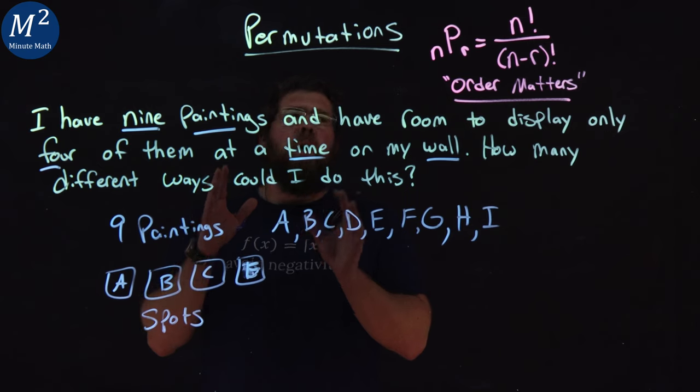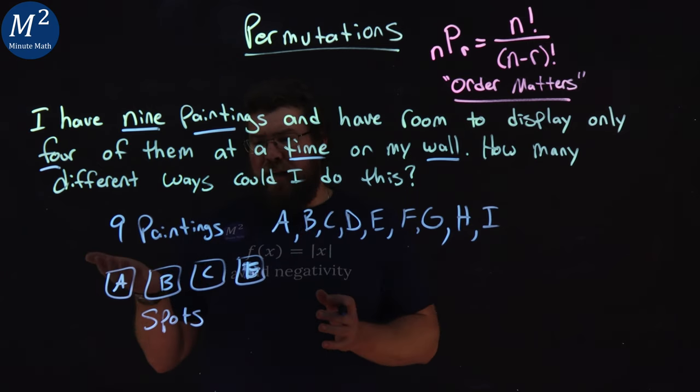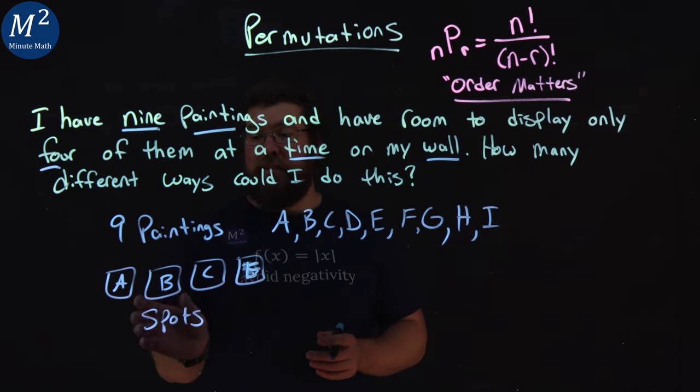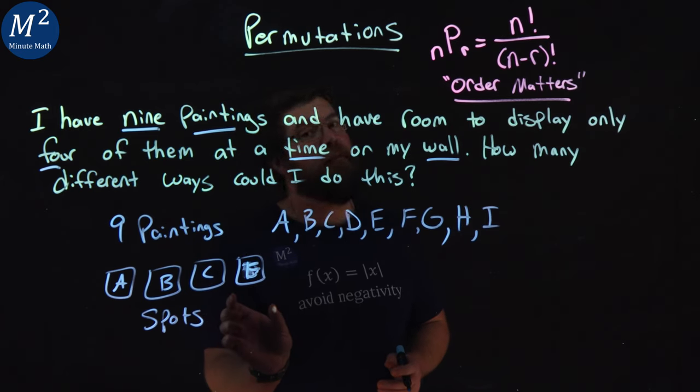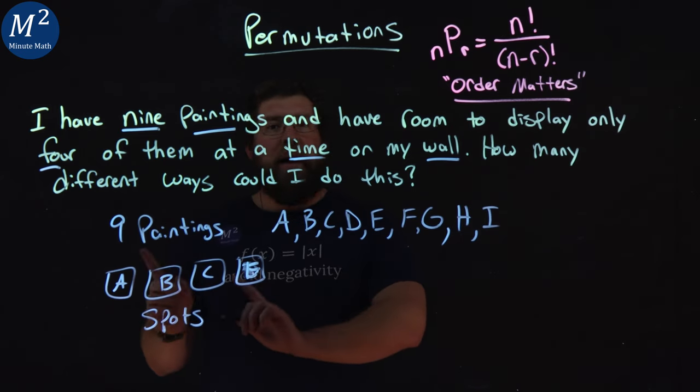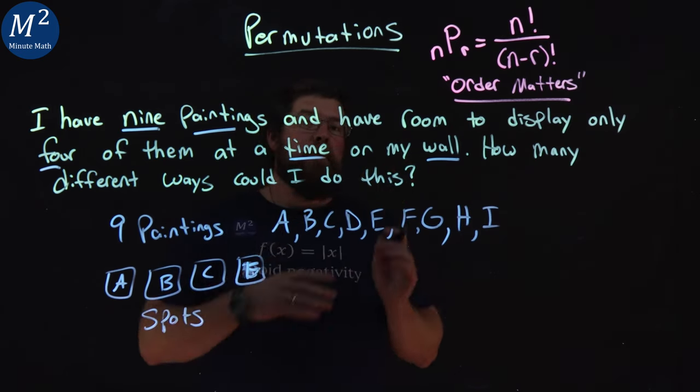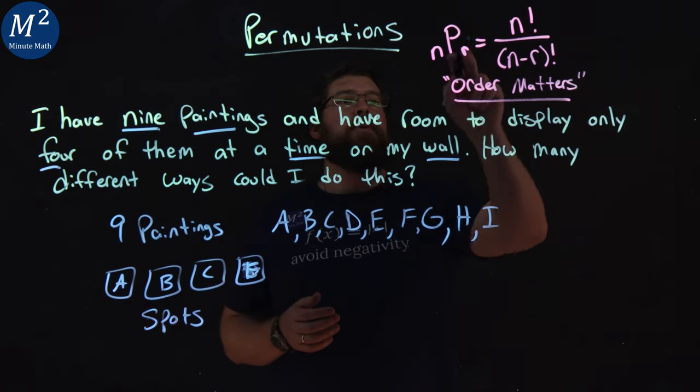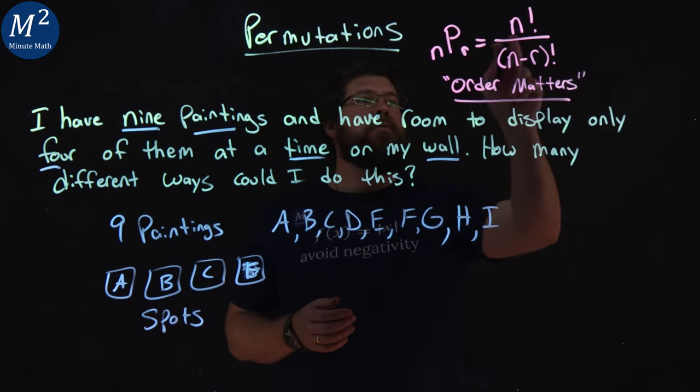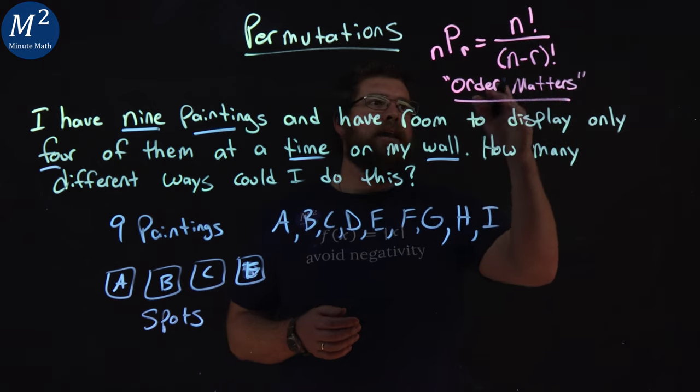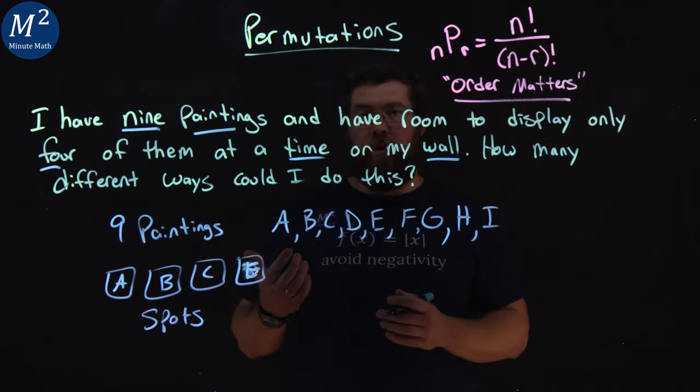Okay. Well, our order matters in this sense. We have spot one, spot two, spot three, and spot four. Since order matters here, we're going to use a permutation. Our formula here, N capital P R is equal to N factorial over N minus R factorial.